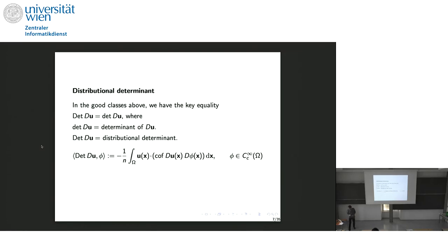A key ingredient in all these proofs is the distributional determinant. In all these good function spaces, the distributional determinant equals the pointwise determinant. This means the pointwise determinant is a divergence, so you can integrate by parts — and this is the key of many proofs. The distributional determinant is defined by placing the derivatives in the test function.